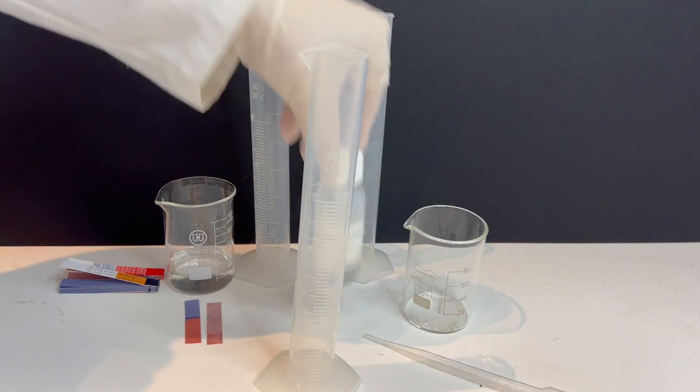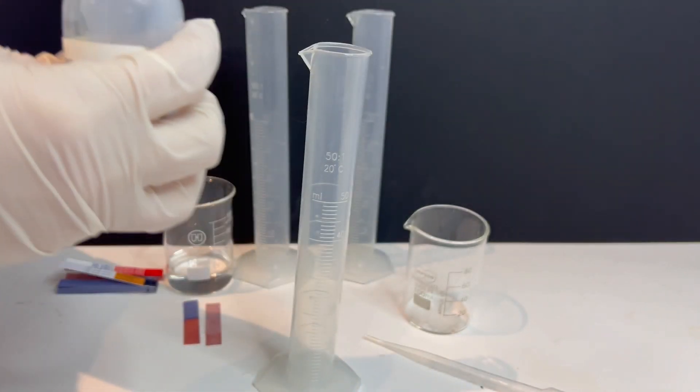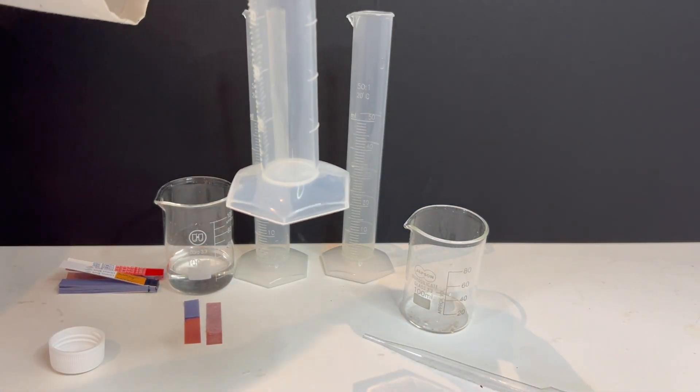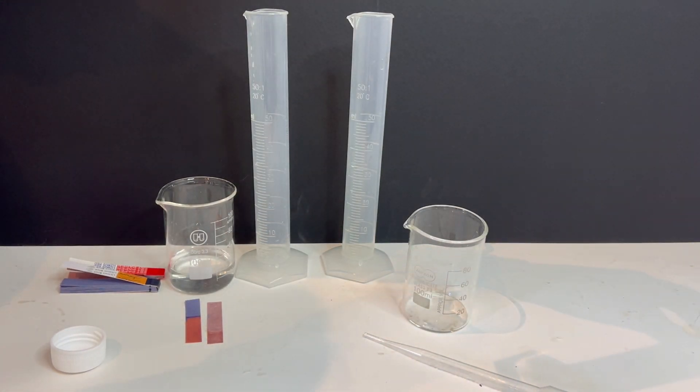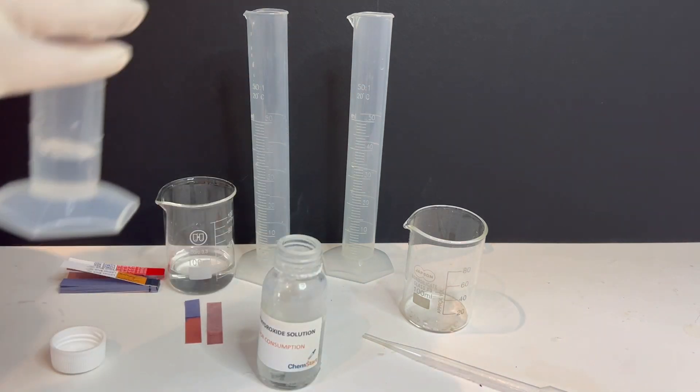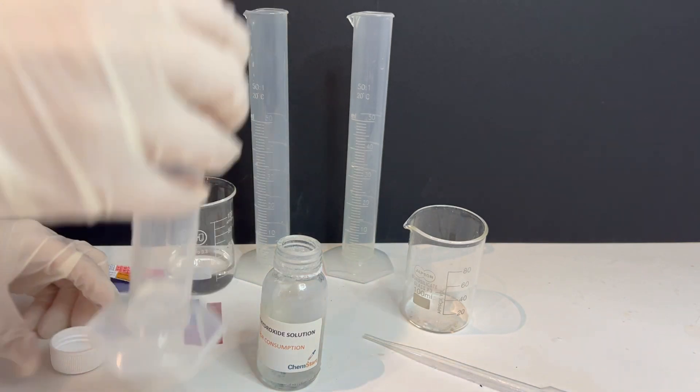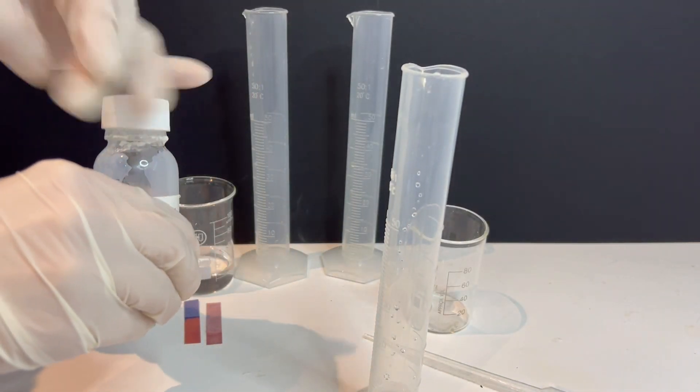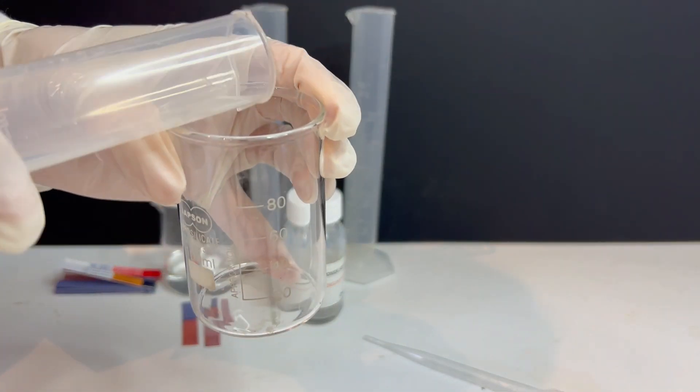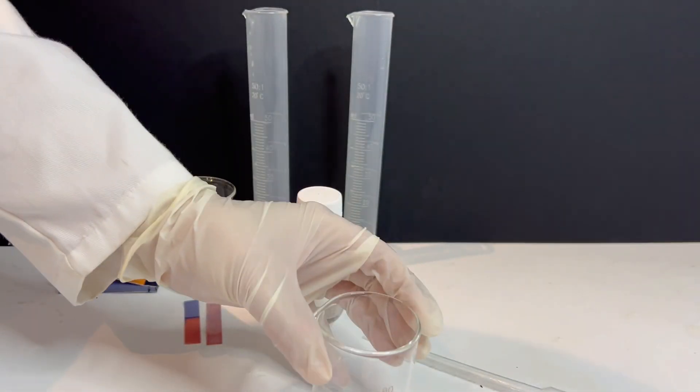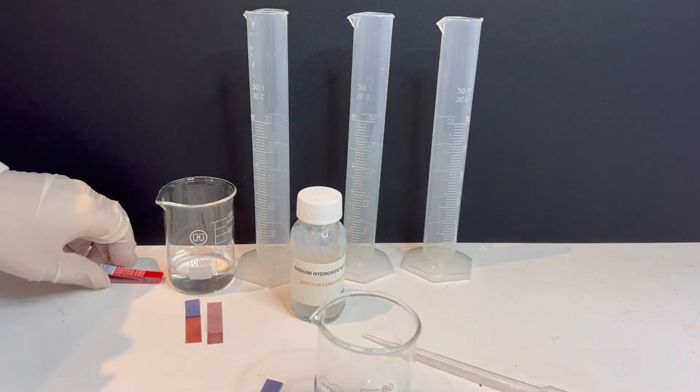Next, I pour about 5ml of sodium hydroxide solution into another clean beaker. Sodium hydroxide is a strong base. I cut two new strips of litmus paper again, one blue and one red.